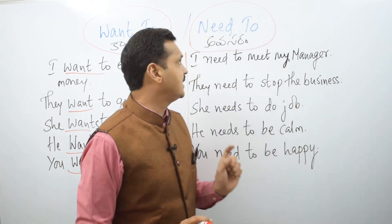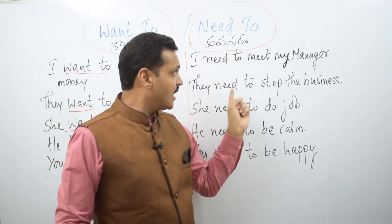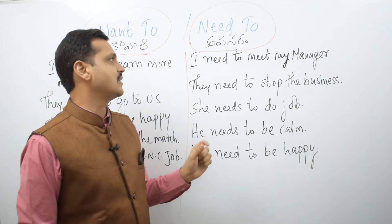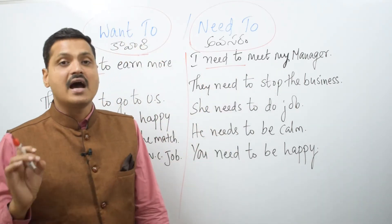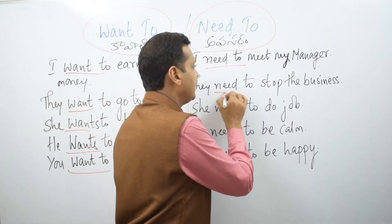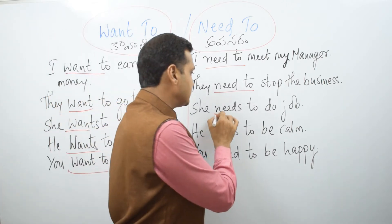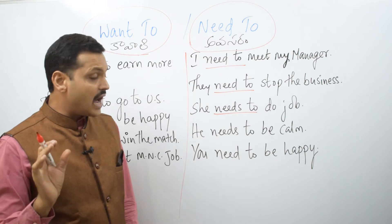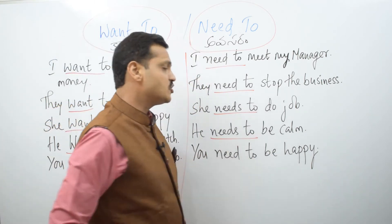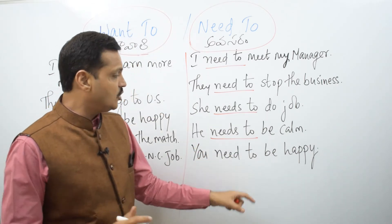Okay friends, next — 'need to'. I need to earn more money. For example: I need to meet my manager. They need to stop the business. They need to work, they need to do a job. They need to be calm — that's what they need. You need to be happy.